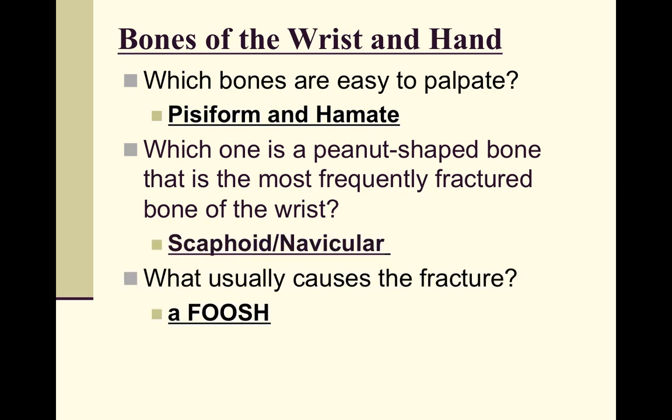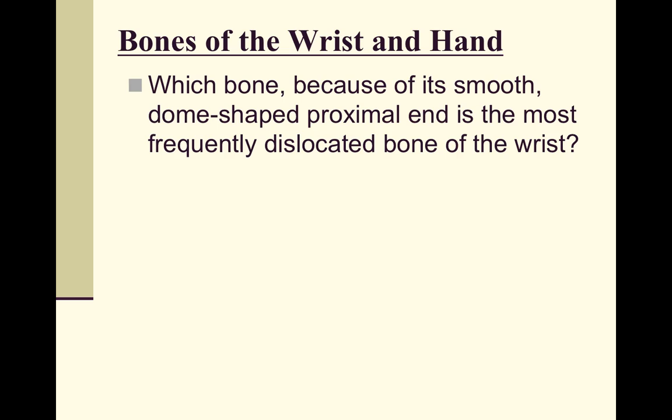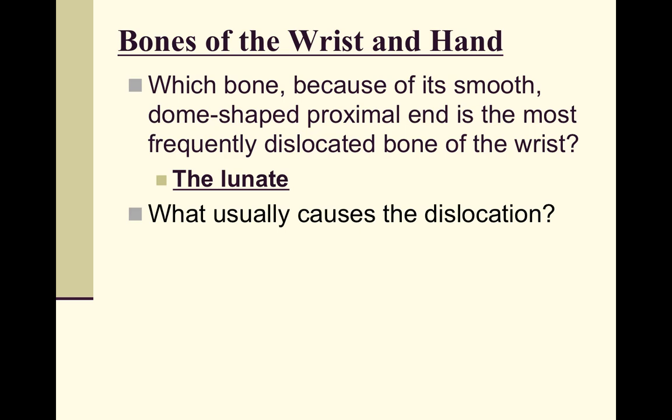The scaphoid is usually fractured by a FOOSH — a fall on an outstretched hand. We have now seen injuries at the wrist, elbow, and shoulder that can be caused by this mechanism. When someone reports falling off a skateboard or tripping with hands straight out, try to isolate the injury location but remember the other potential areas. The lunate is frequently dislocated, typically by a fall on a flexed wrist rather than an outstretched hand.